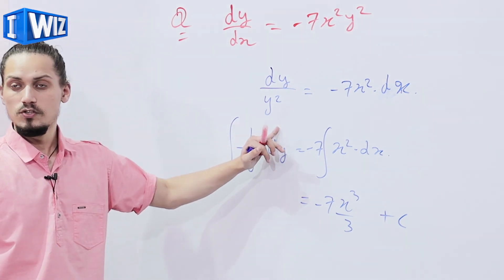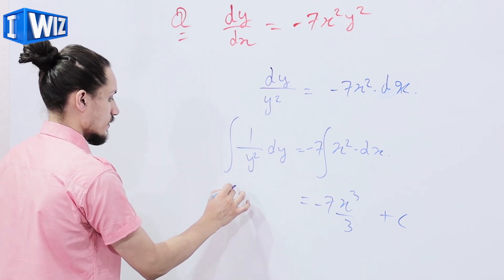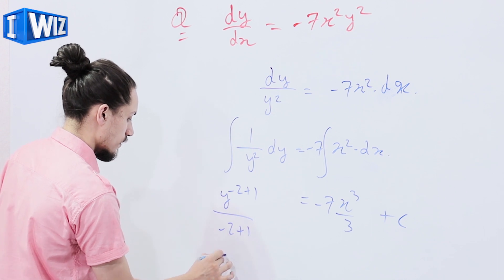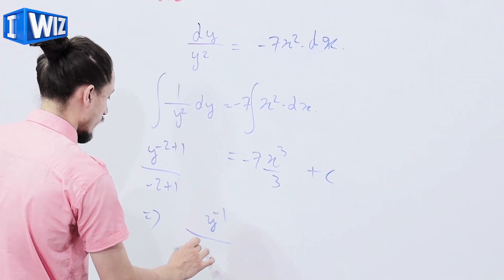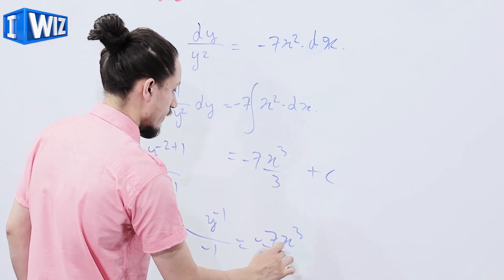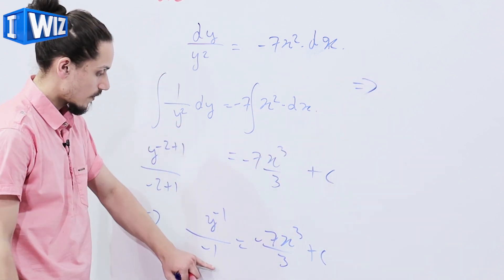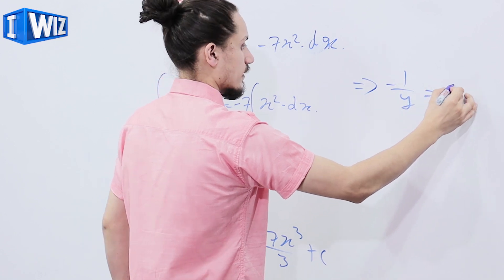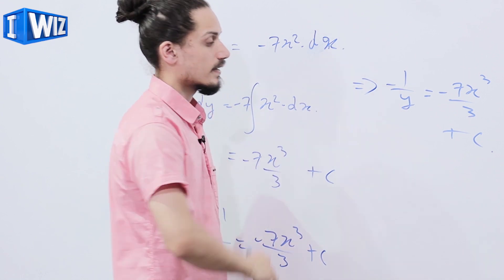The integral of y⁻² is y^(-2+1)/(-2+1), which gives y^(-1)/(-1). So we have -1/y = -7x³/3 + c, and hence the result.